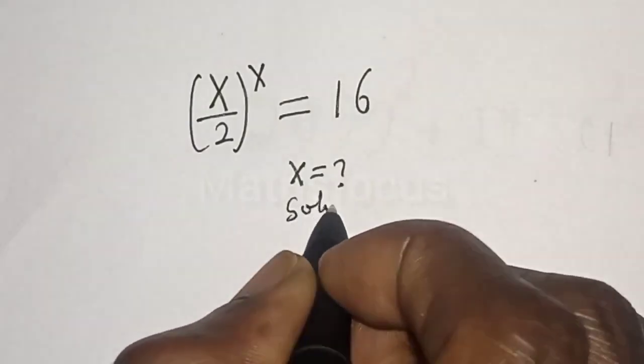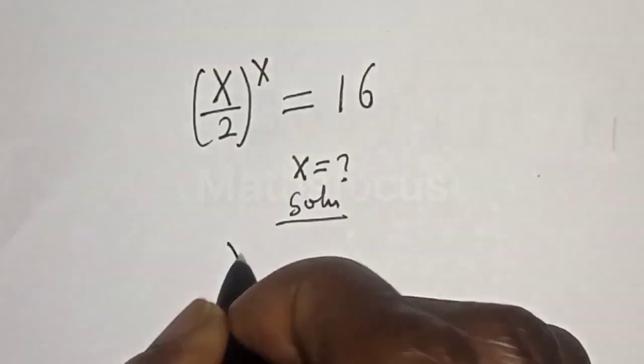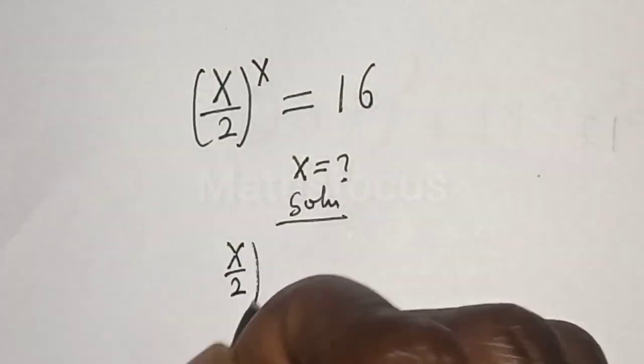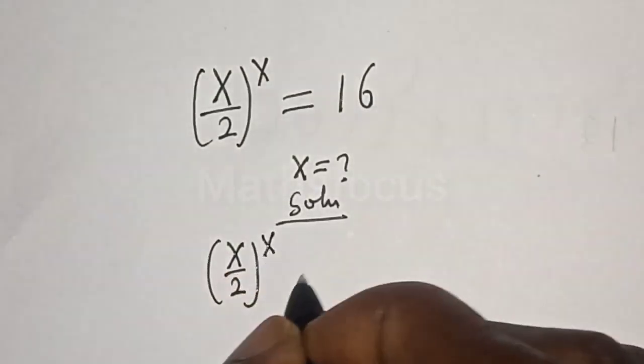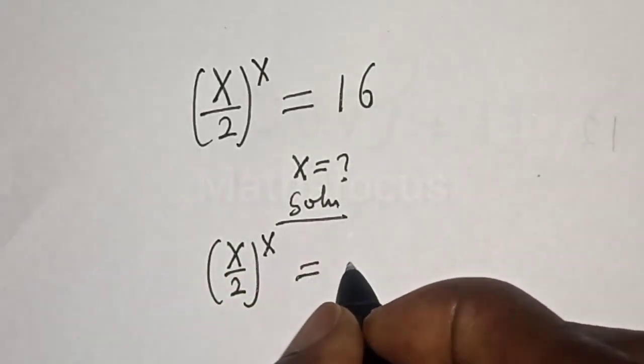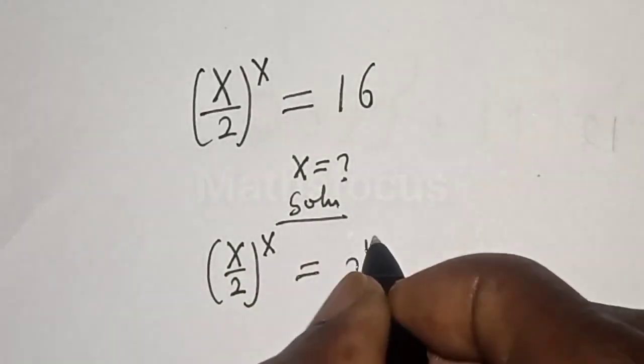Solution. X divided by 2 to the power of S equals 16, which can be written as 2 to the power of 4.